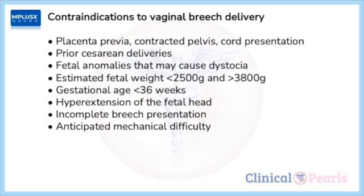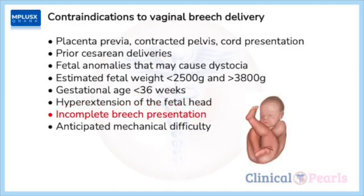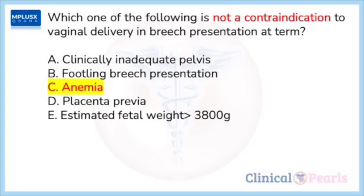Additional contraindications include: estimated fetal weight less than 2,500 grams or greater than 3,800 grams, gestational age less than 36 weeks, hyperextension of the fetal head, incomplete breech presentation, and anticipated mechanical difficulty. Anemia is NOT a contraindication to vaginal delivery for breech presentation — therefore anemia is the correct answer.